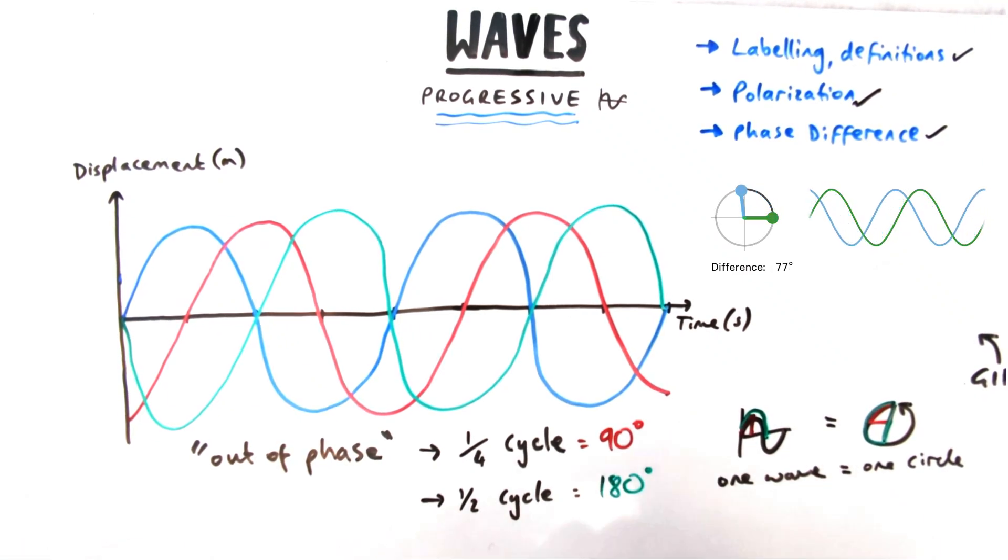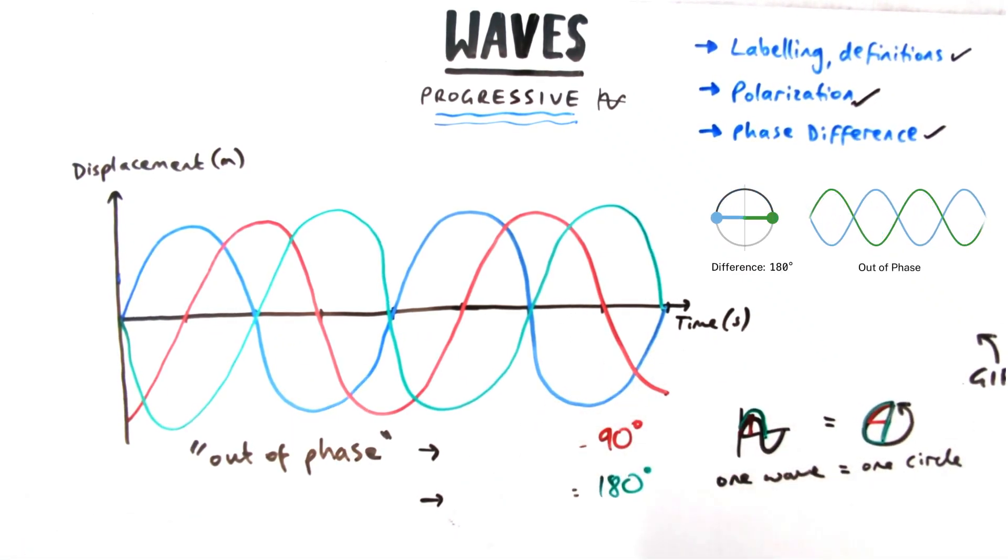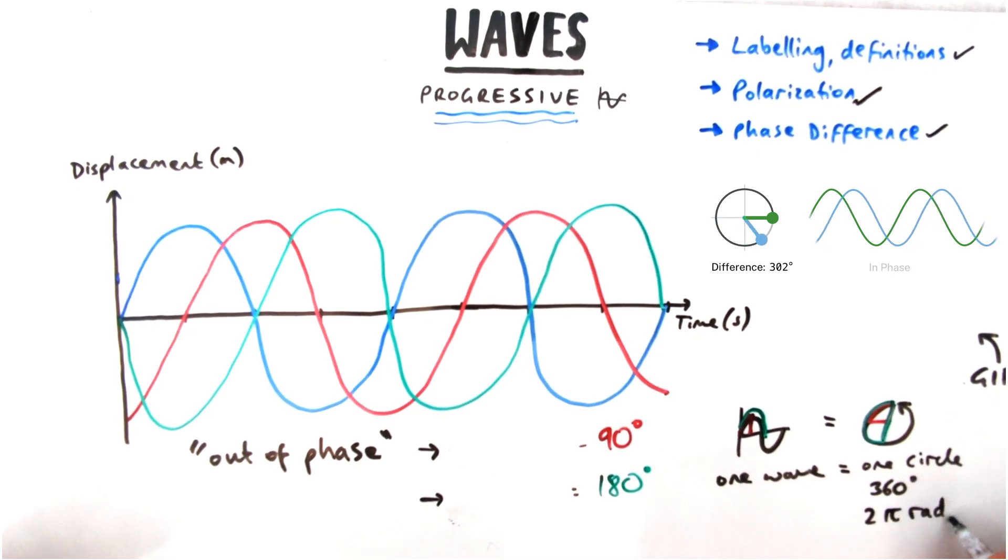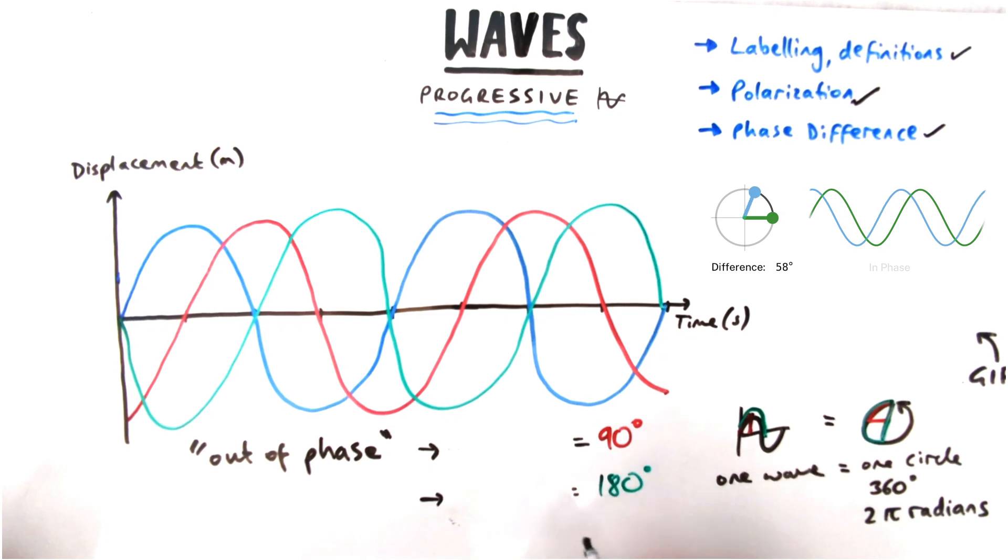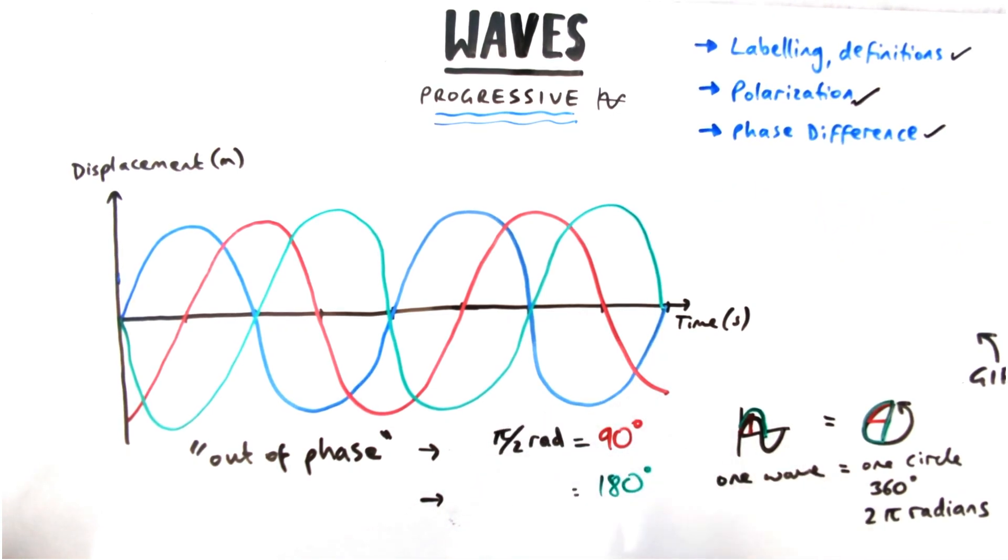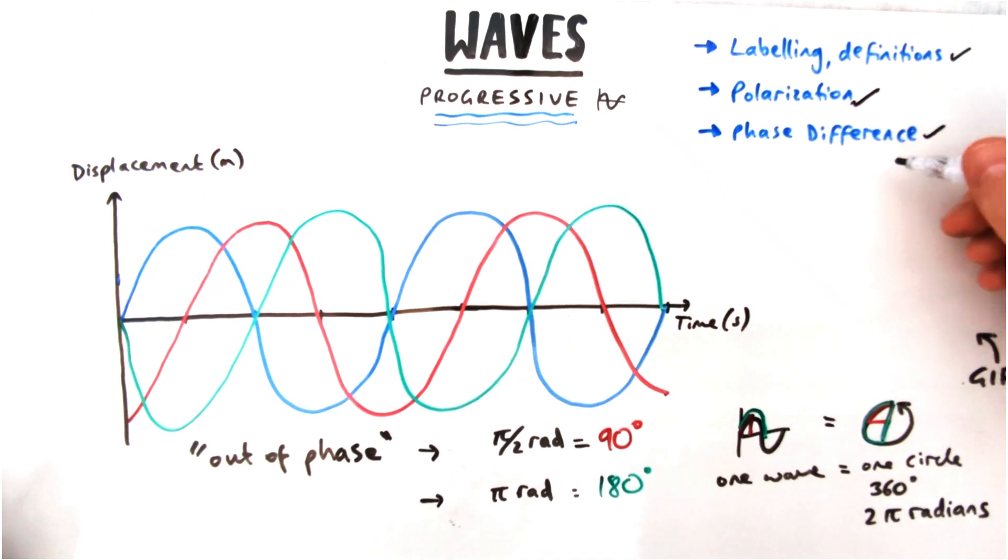Instead of saying degrees, we can also talk about radians. If you do A-level maths, you should know about radians already. Radians in a circle are 2π in total, so that means for 90 degrees, a quarter of 2π is half π, or π over 2. And half of 2π is π radians.